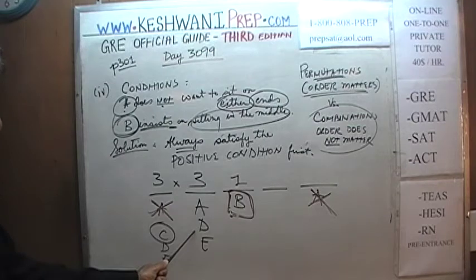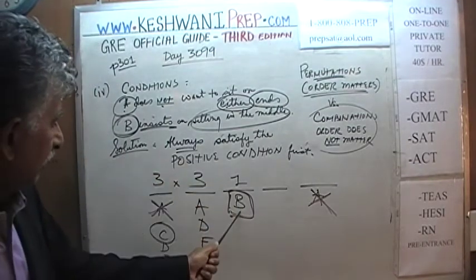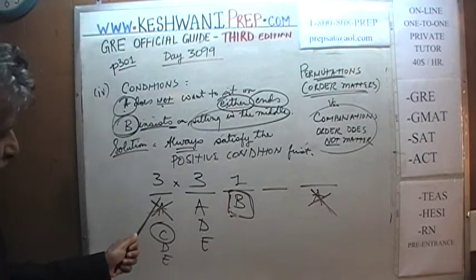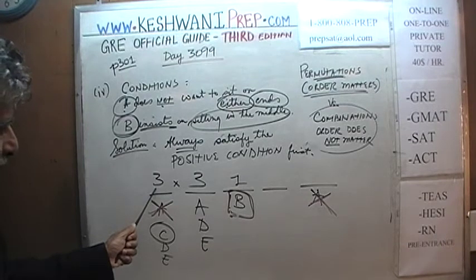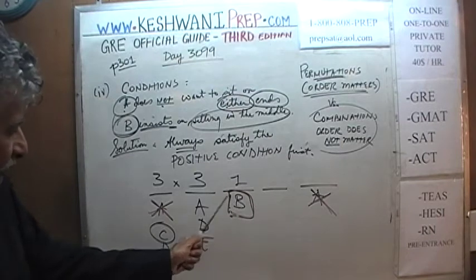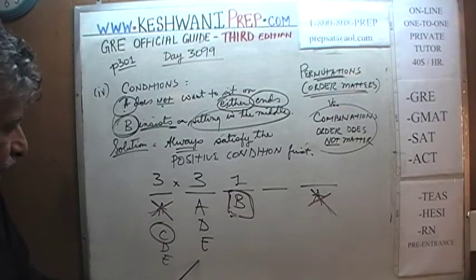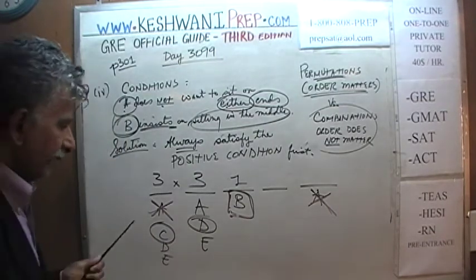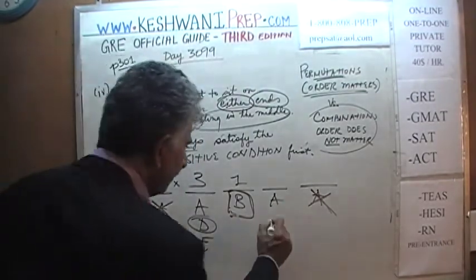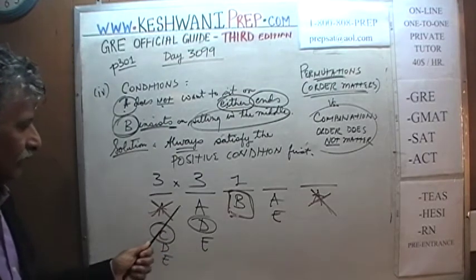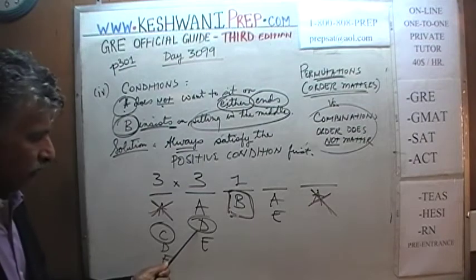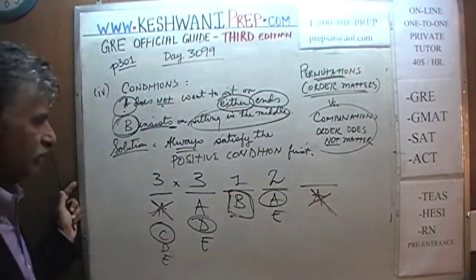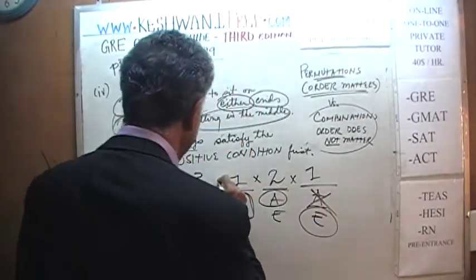Let me check: A does not want to sit on either end, B insists on sitting in the middle. B is in the middle, A cannot sit on either end. So for the first seat: C, D, or E — three possibilities. After placing someone there, for the next seat we can have A, D, or E — three more. Then picking D for seat two, either A or E can go in seat four — two ways. And the last remaining person fills the final spot.